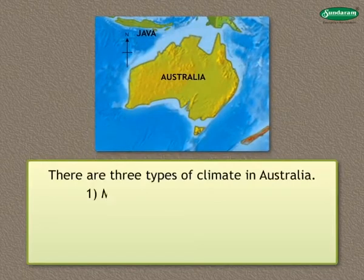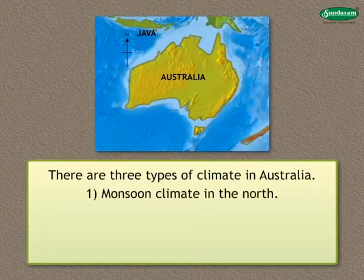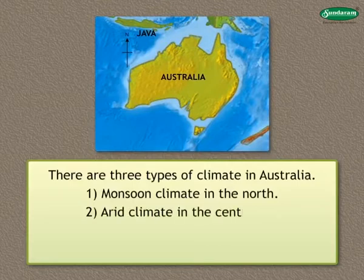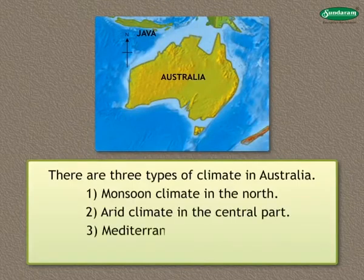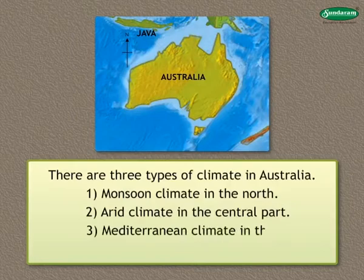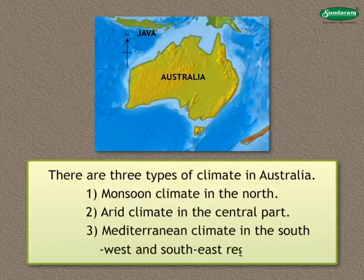There are three types of climate in Australia: 1. Monsoon climate in the north. 2. Arid climate in the central part. 3. Mediterranean climate in the southwest and southeast regions.